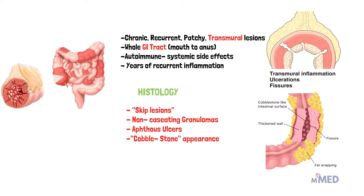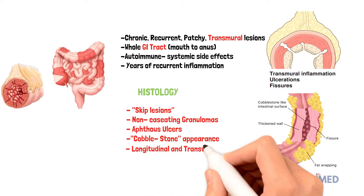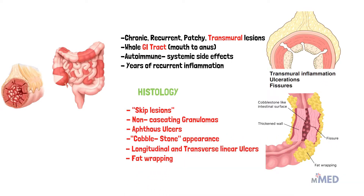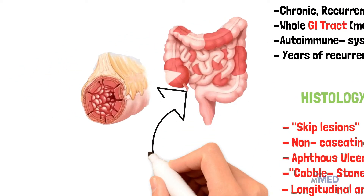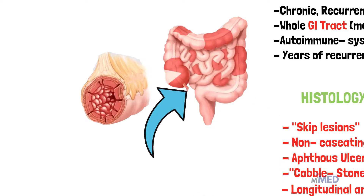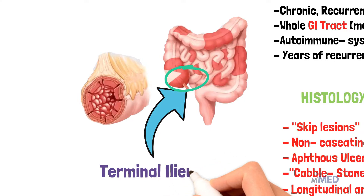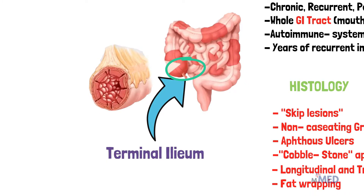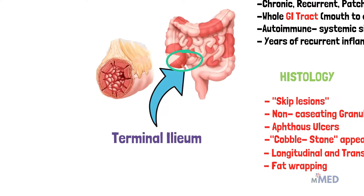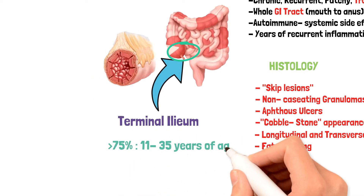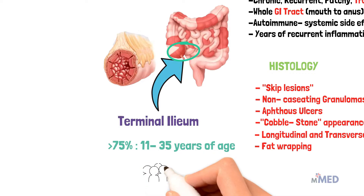The cobblestone appearance occurs because the diseased tissue is depressed and is below the level of the normal mucosa. We can also observe creeping fat, which occurs when the mesenteric fat — the kind that naturally develops in the abdominal area — wraps around the bowel wall causing it to thicken. The terminal ileum is the most common site of Crohn's disease.